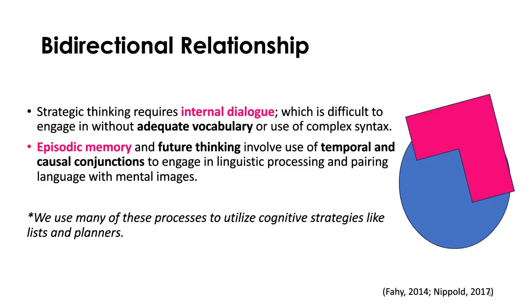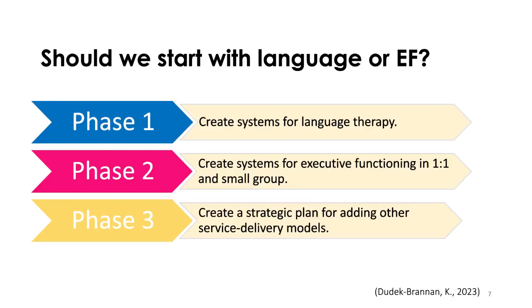We need to have these skills in order to use a lot of the strategies we think of as executive functioning strategies. When they don't work, it's usually because kids are not engaging in that internal process. The million dollar question is — if we think about all of these diagnostic criteria in our therapy planning, we also want to think about what we need as clinicians in order to look at a diagnosis, look at a student who might have multiple diagnoses, and develop a strategic plan that uses multiple service delivery models.